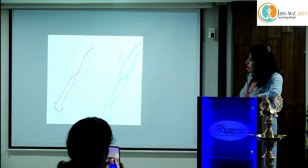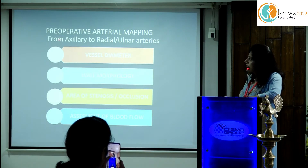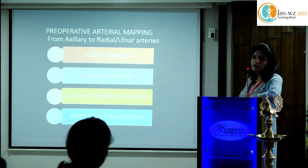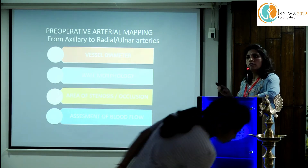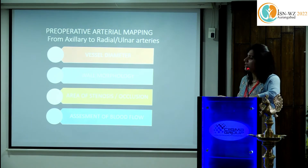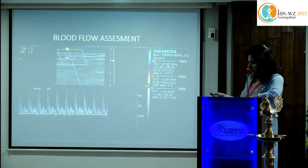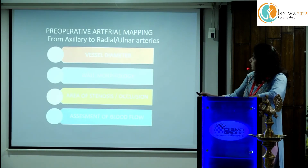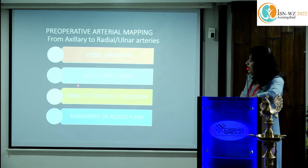For arterial mapping, evaluation is done from the axillary to the radial or ulnar arteries, though in day-to-day practice we usually go from the brachial artery up to the radial artery. When evaluating the artery, the parameters we look for are: vessel diameter, wall morphology, areas of stenosis or occlusion, and assessment of blood flow.